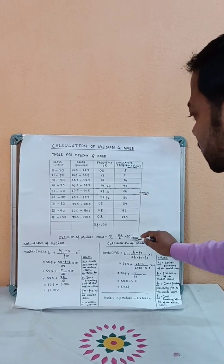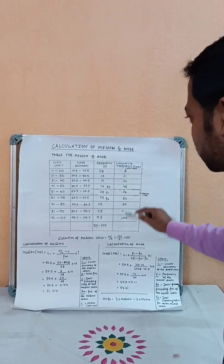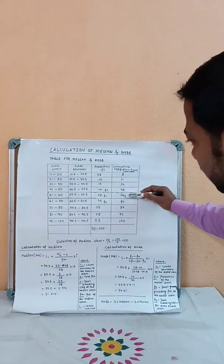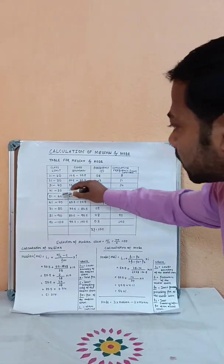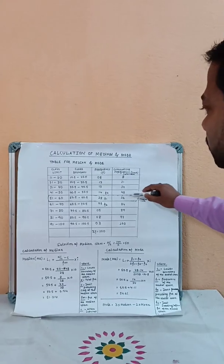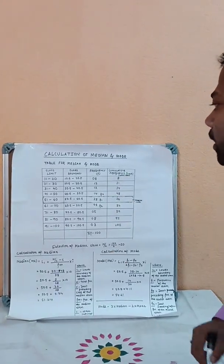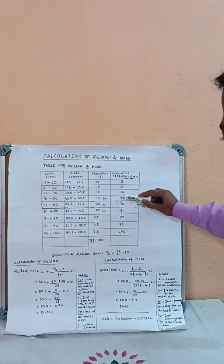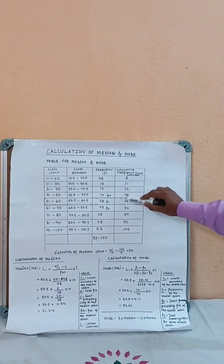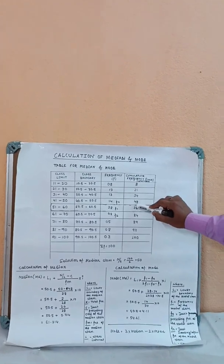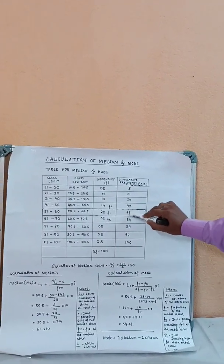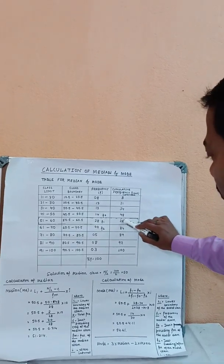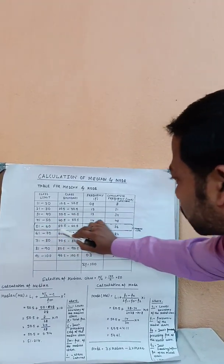The median class is identified by locating where the cumulative frequency first reaches or exceeds 50. The cumulative frequencies 48 and 76 bracket the value 50, so between 48 and 76 lies our median class.